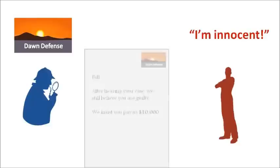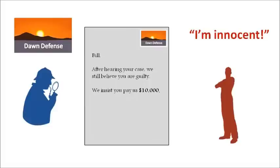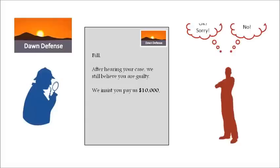After hearing his case, if they remain convinced of his guilt, they will insist on payment, threatening to use force against him if necessary. Bill now faces the same two choices. If he still refuses to pay, Dawn Defence will send armed men round to his house to enforce their punishment.